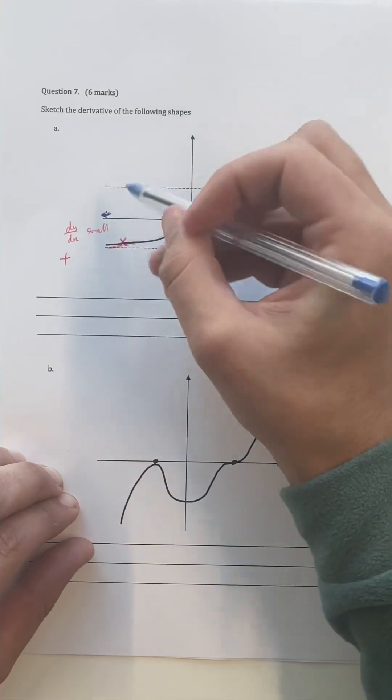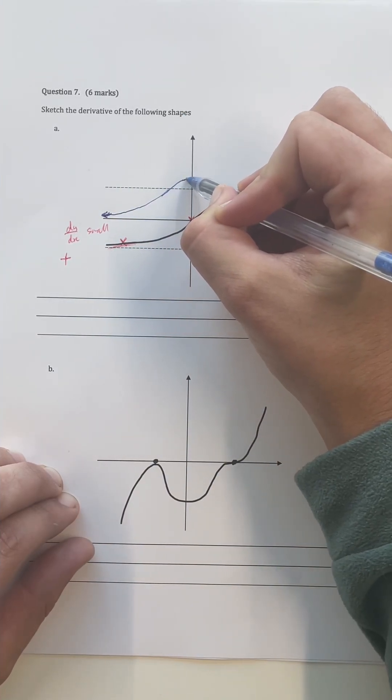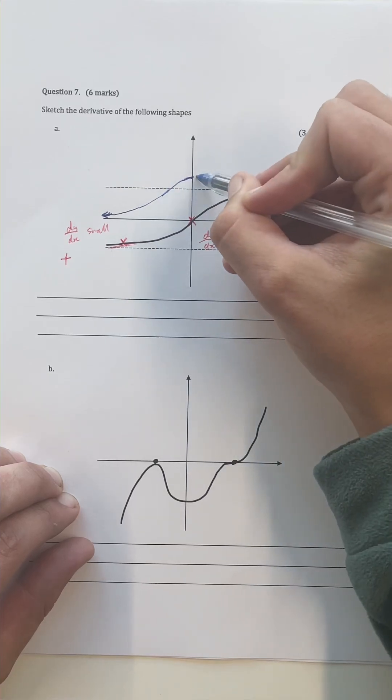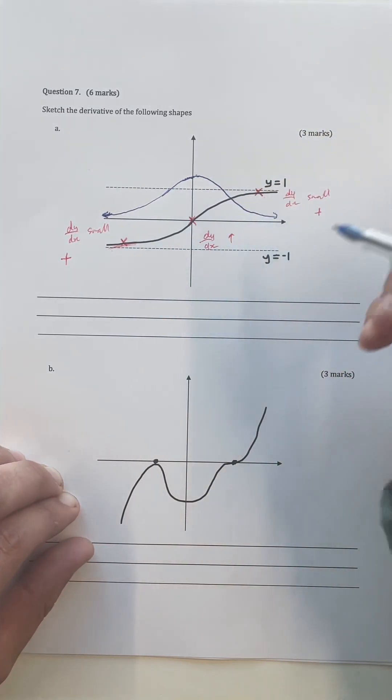So we're going to start off with a very small positive derivative, we're going to go towards some sort of peak which is going to be along the y-axis, and then we're going to have exactly the same symmetrical shape going towards positive infinity.